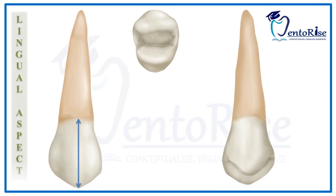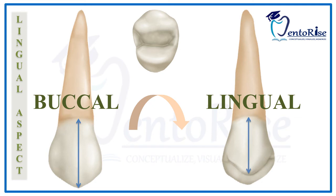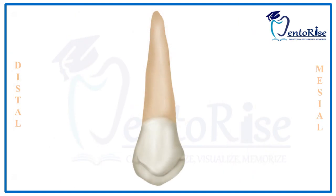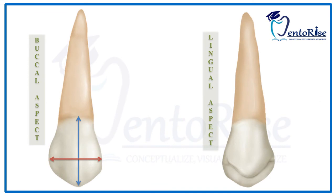Now discussing the lingual aspect: when we rotate the tooth from the buccal toward the lingual aspect, we observe that another cusp of shorter length is present on the lingual side. This confirms that the permanent maxillary first premolar has two cusps — the buccal cusp and the lingual cusp. The gross outline from the lingual aspect is the reverse of that from the buccal aspect. There are certain peculiarities of the lingual cusp that help differentiate the permanent maxillary first premolar from the permanent maxillary second premolar.